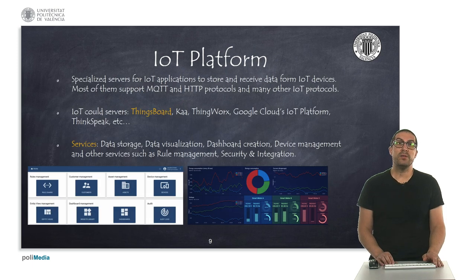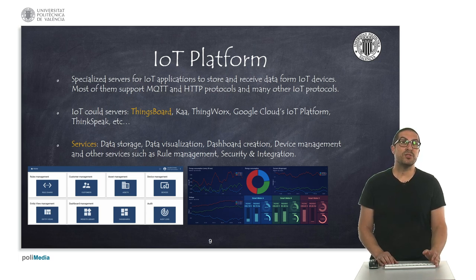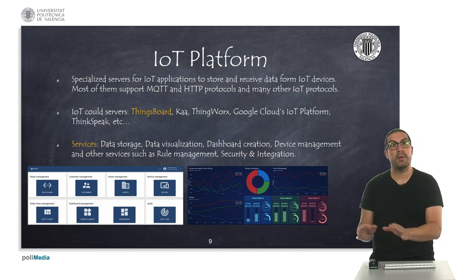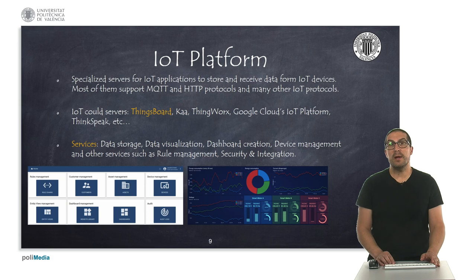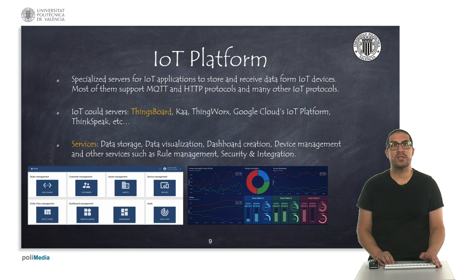When an IoT device transmits data to an external server, this can be visualized because there are many companies offering these services and supporting all transmission protocols used in IoT applications, such as MQTT or HTTP. We will talk about that in the second part of this course. There are many options that vary from server to server. Among all of them, our proposal is to work with ThingsBoard. This is an open source platform that offers free services up to a given amount of data.